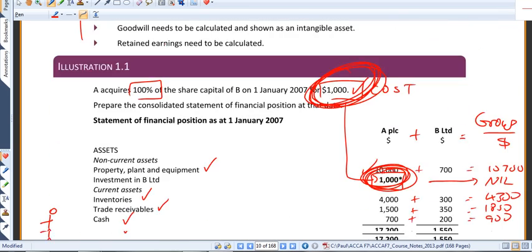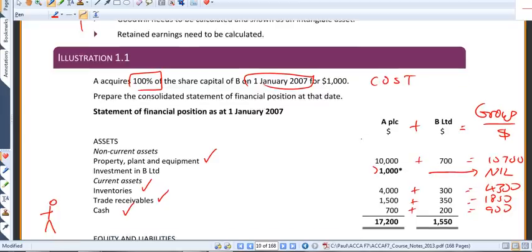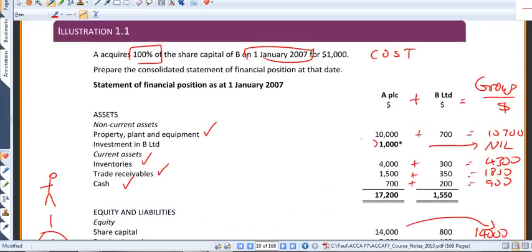Going back to the original question, that's when we bought or acquired the shares in B, the 1st of January 2007.